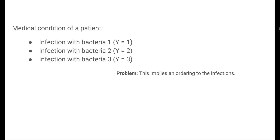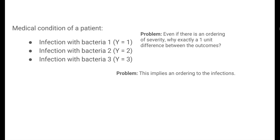The problem with this is that it implies an ordering to the three types of infection. For some reason, we have implied that infection 2 is more severe than 1, and that infection 3 is more severe than both 1 and 2. Even if 1 is the least severe and 3 is the most severe, the exactly one-unit difference between outcomes doesn't necessarily make a lot of sense. The problem with linear regression for classification is that it is not tailored for dealing with categorical variables.